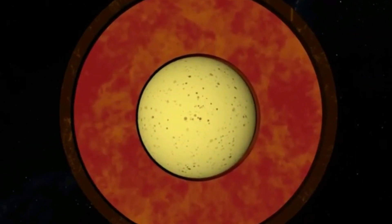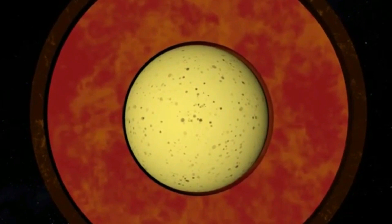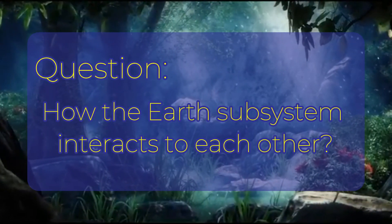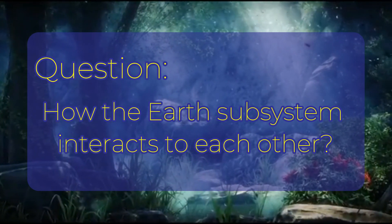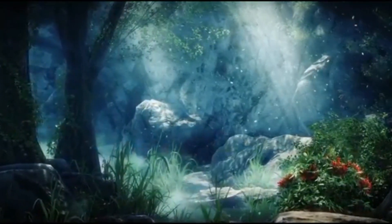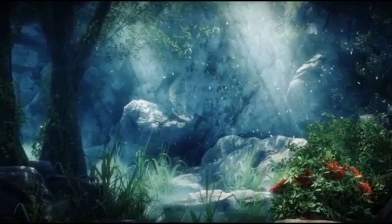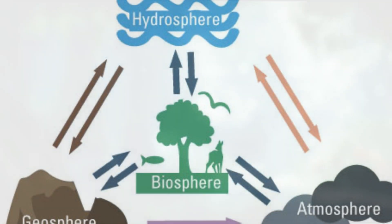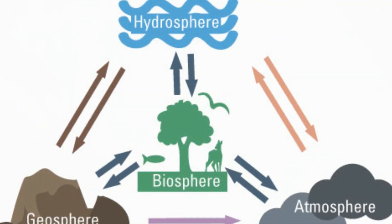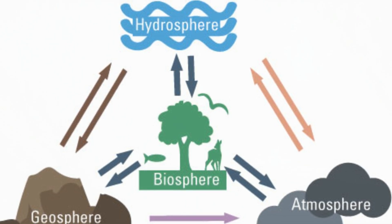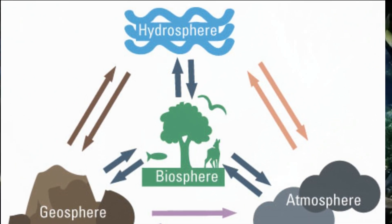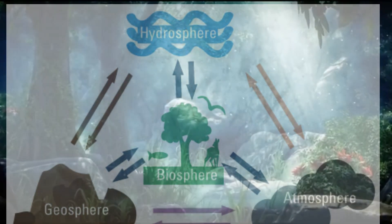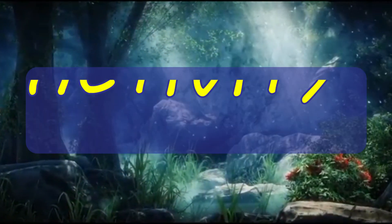That covers the subsystems of the Earth. Now the question is: how do the Earth subsystems interact with each other? There are many ways, but the most common scenario is: the atmosphere provides the geosphere with heat and energy needed for rock breakdown and erosion. The geosphere in turn reflects the sun's energy back into the atmosphere. The biosphere receives gases, heat, and sunlight or energy from the atmosphere.